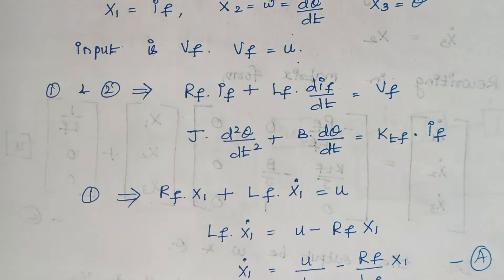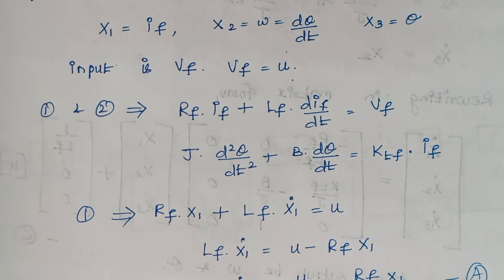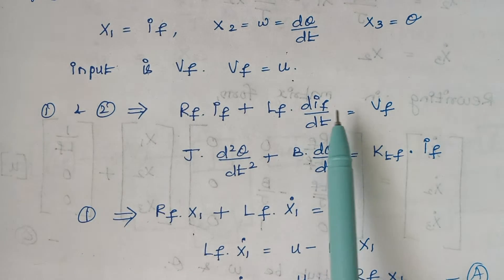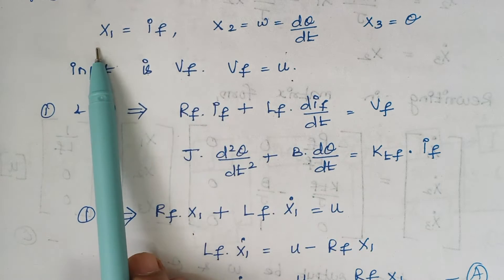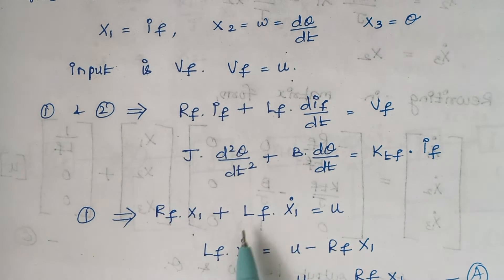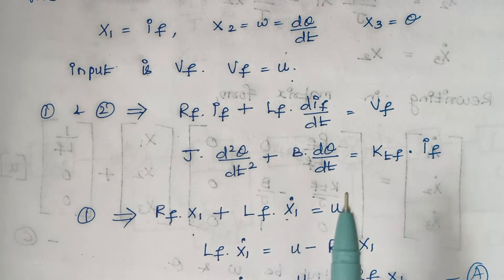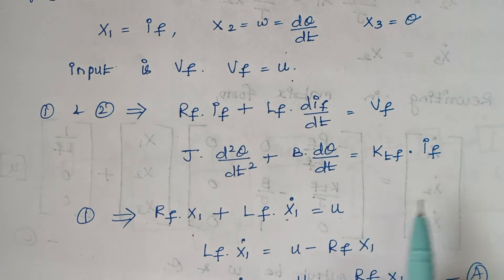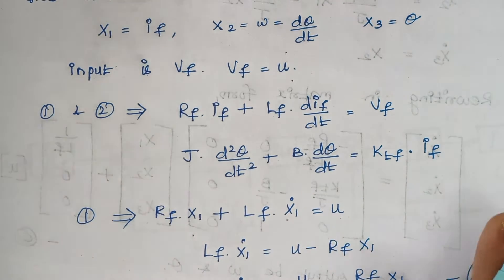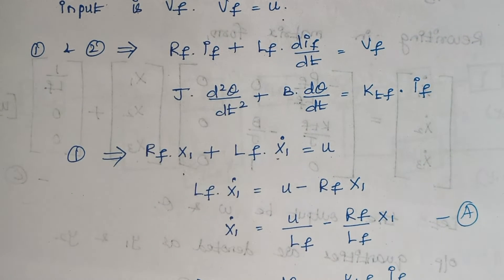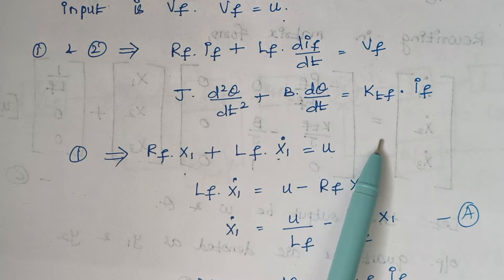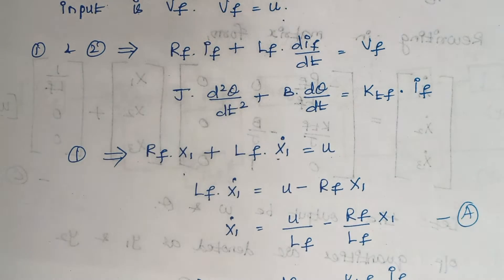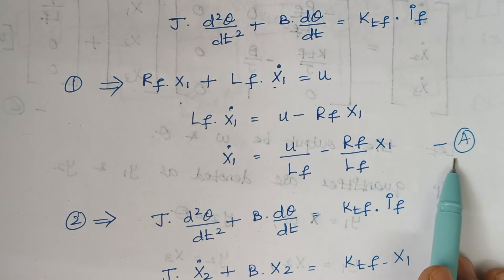Now we rewrite Equations 1 and 2 in terms of state variables. Rewriting Equation 1: replacing IF with X1 and dIF/dt with X1-dot, we get X1-dot = (1/LF)·U − (RF/LF)·X1. Mark this as Equation A.